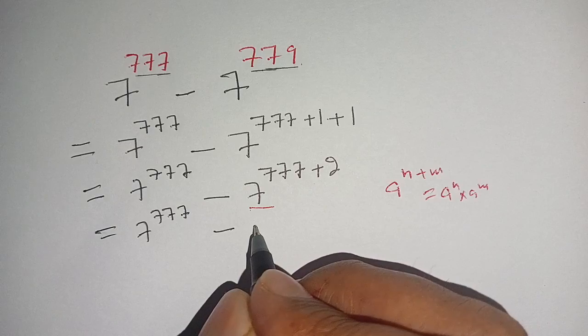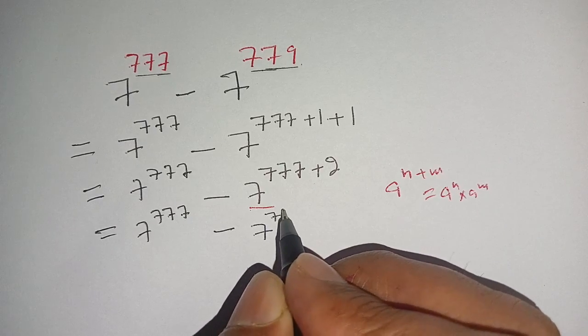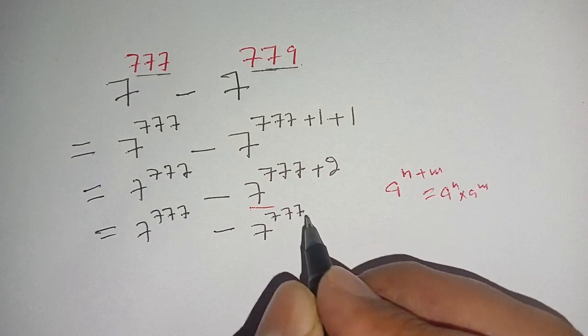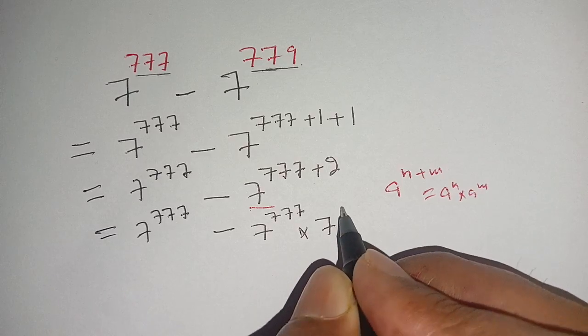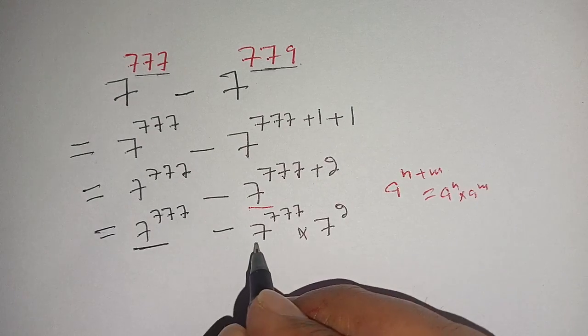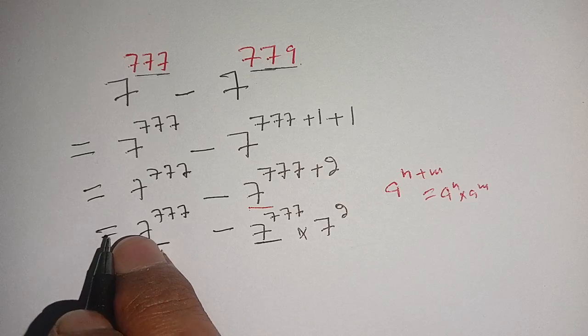From this term and from this term, we can take out 7^777.